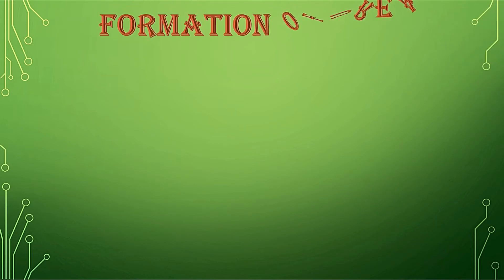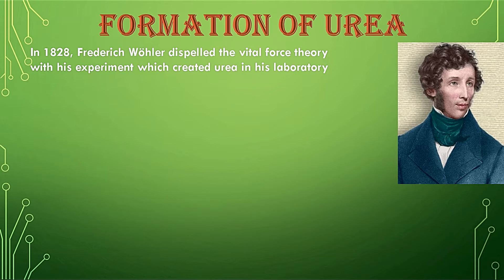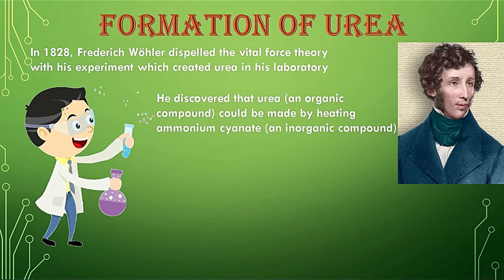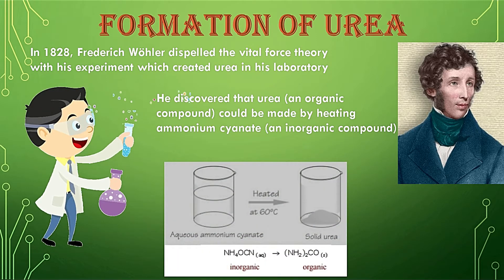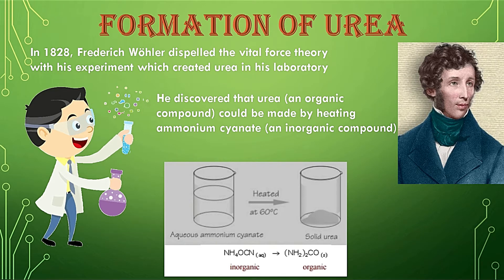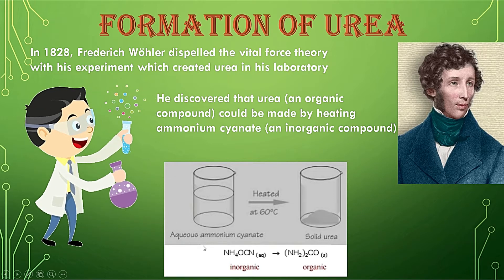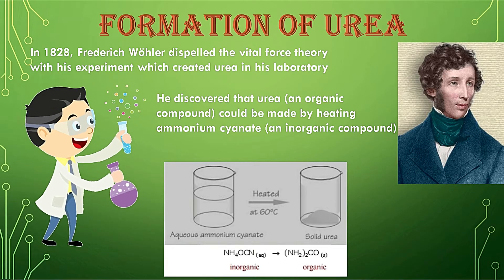But the scientist Wöhler formed urea for the first time in his lab in 1828. He disproved the vital force theory by creating the organic compound urea in his laboratory. He discovered that urea, an organic compound, could be made by heating ammonium cyanate, which is an inorganic compound. He was trying to obtain solid ammonium cyanate from aqueous ammonium cyanate by heating, but on heating he formed solid urea, which is an organic compound. So for the first time, an organic compound was prepared in the laboratory. After that, every year millions of organic compounds are prepared in the laboratory.